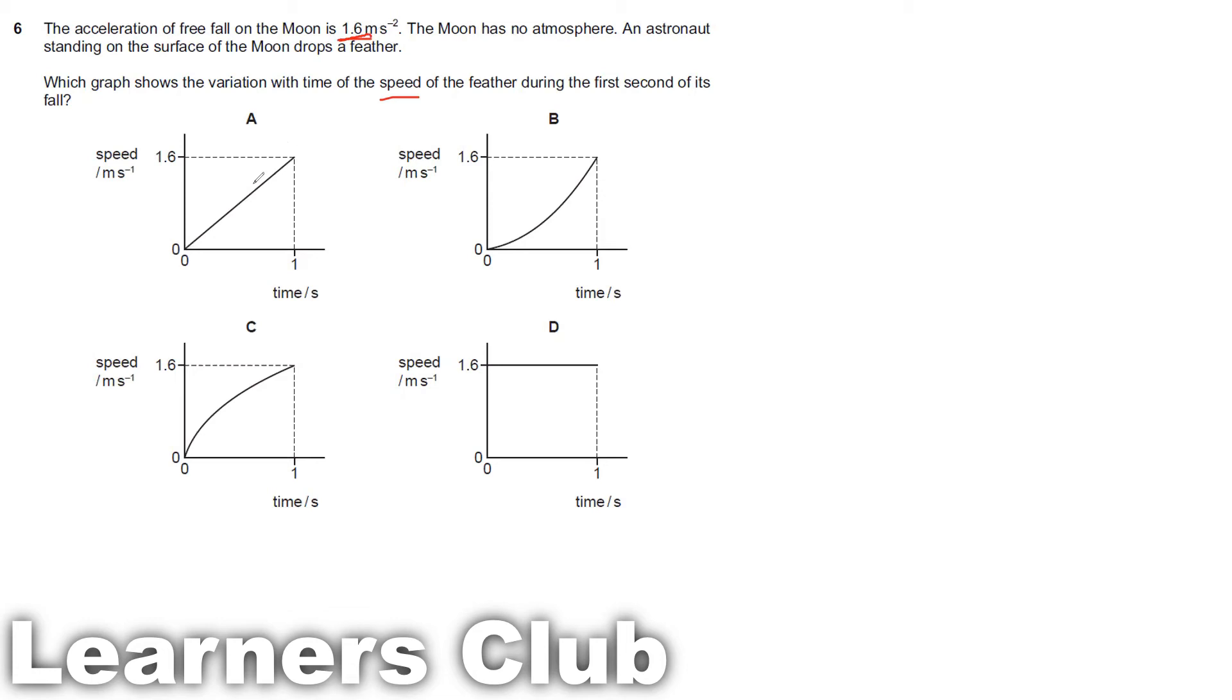Let's see the first option. If you take the gradient here, this is one coordinate, this is one coordinate. So the gradient of this graph is 1.6 meter per second square. So this should be the answer.